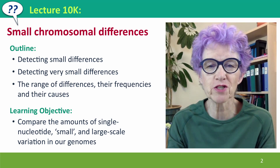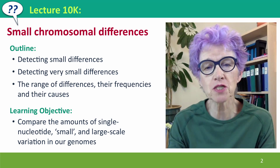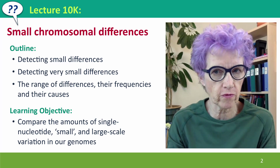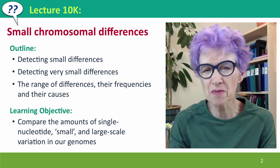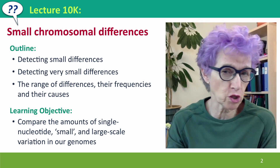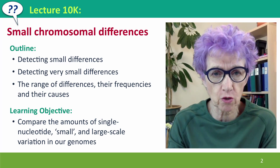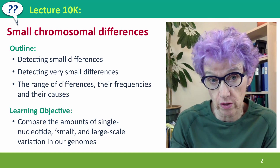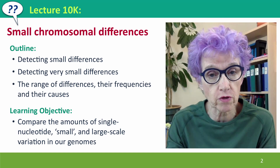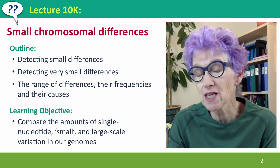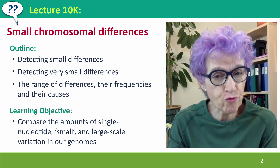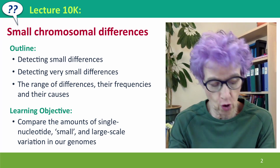Welcome back to Useful Genetics. This is lecture 10K, where we're going to talk about small chromosome differences. First we'll talk about detecting differences that are smaller than the ones we've been describing so far, but which are still very large. And then about ways to detect very small differences. And then we'll consider the range of the differences being found, how frequent they are in our genomes, and their causes.